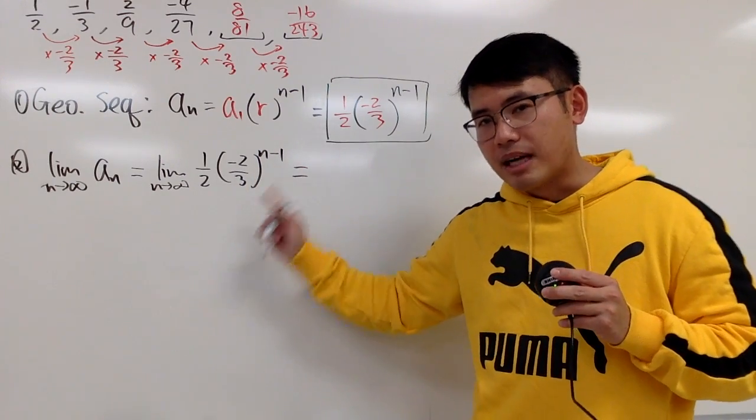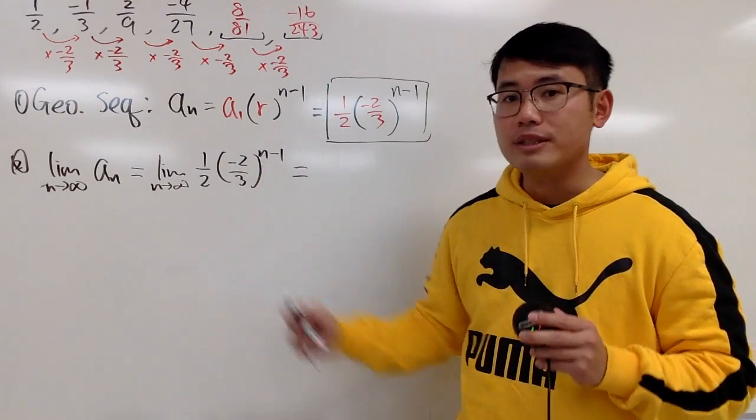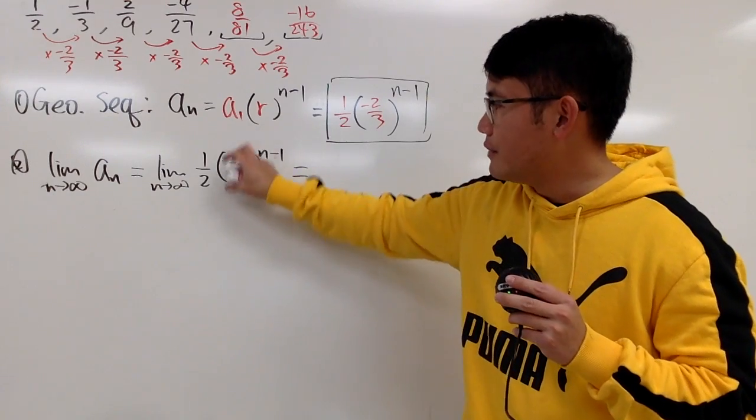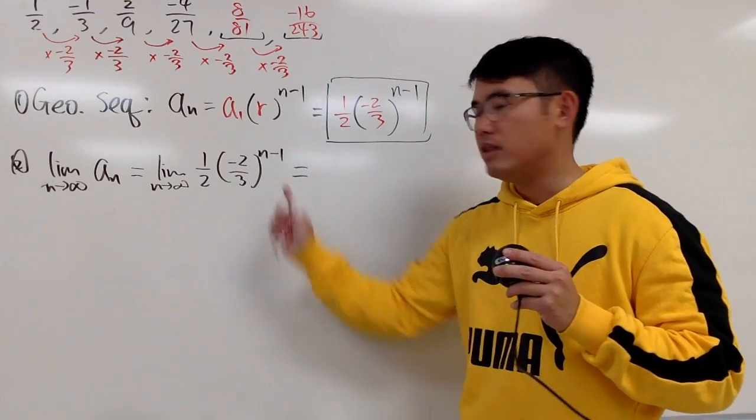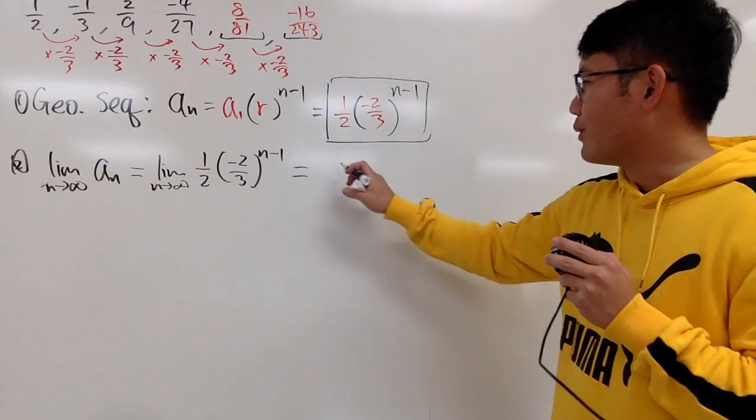Because the r, namely the common ratio, its absolute value is less than 1. When you have something less than 1 to a positive infinity power, minus 1 to infinity, this right here is 0.